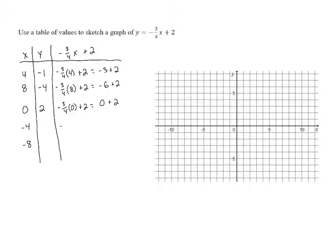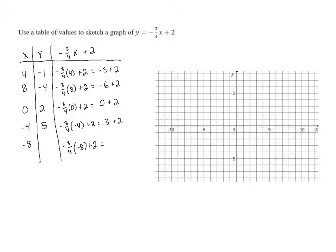Let's plug in the negatives. We've got negative three-fourths times negative four plus two. A negative times a negative is a positive, so those negatives will cancel, and we're left with three. And three plus two gives us five. Then we substitute in negative eight for x: negative three-fourths times negative eight. A negative times a negative is a positive, and three-fourths times eight is six. Then six plus two gives us eight.